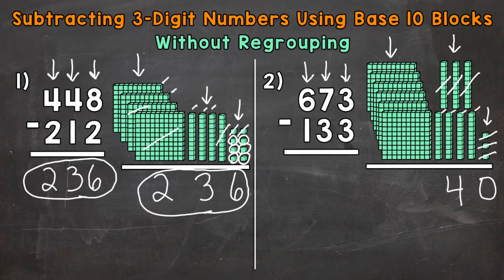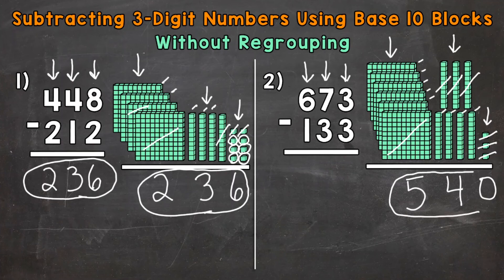And then lastly we have the hundreds. We have 6 hundreds minus 100, so let's take away or subtract 1. How many do we have left? Well 1, 2, 3, 4, and 5. So our answer is going to have a 5 in the hundreds place. Final answer: 540.